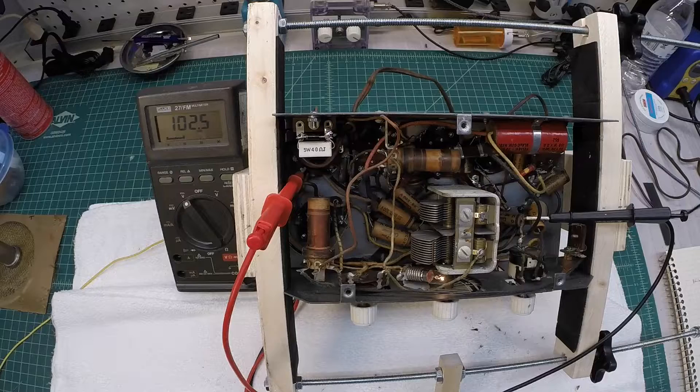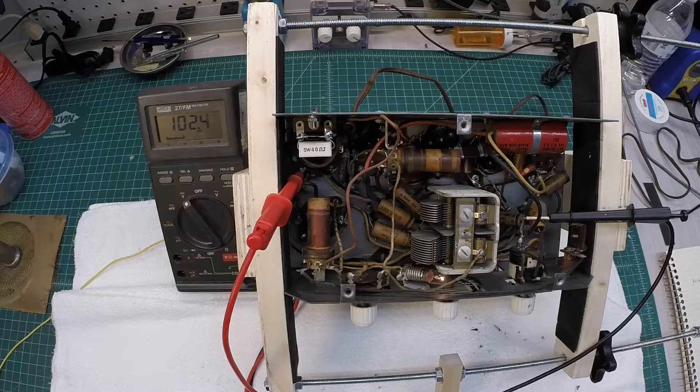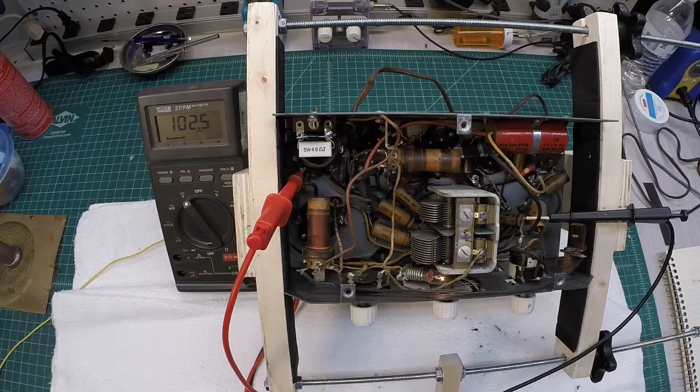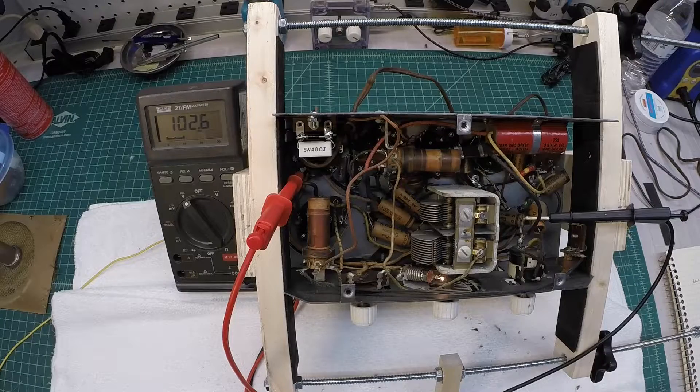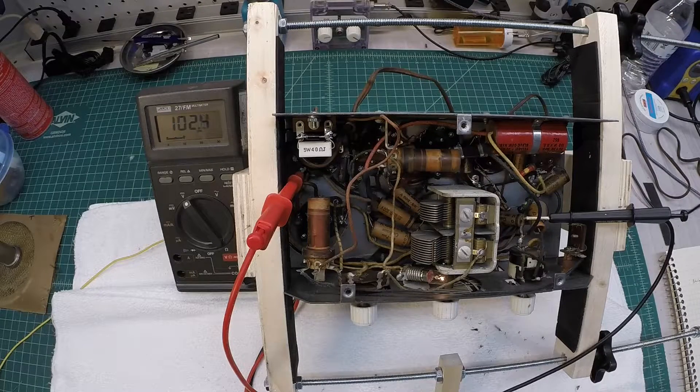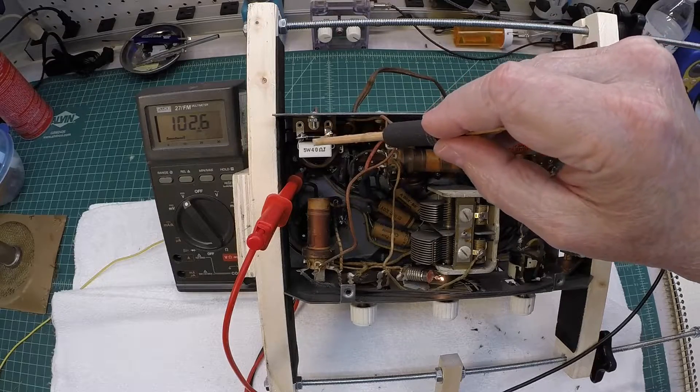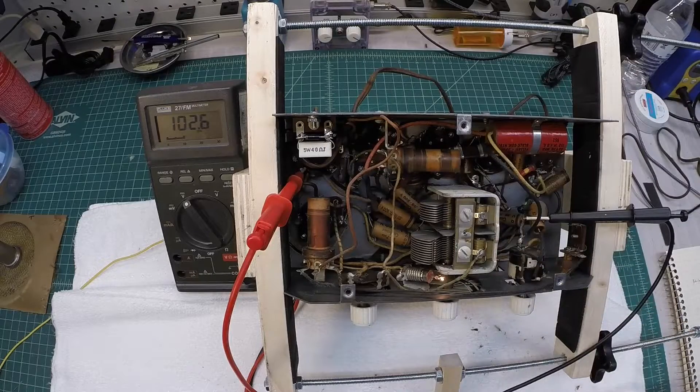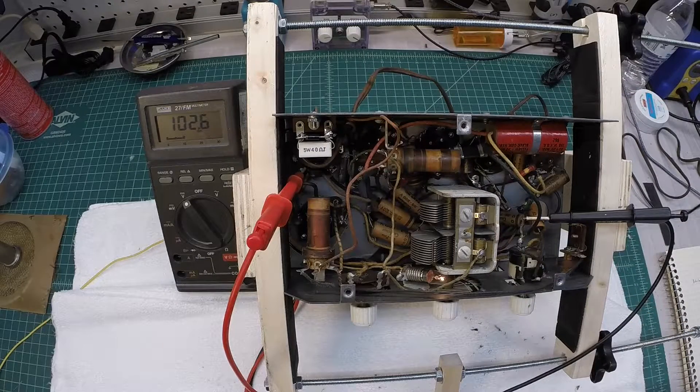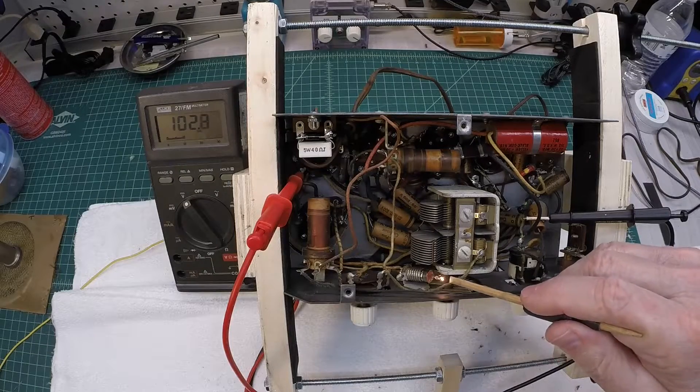So let's take a look at the schematic changes that I made to accommodate the ballast tube here by using a resistor in addition to a diode. And then we'll take a look as well at the Zener diode that was added and also the 5 watt 40 ohm resistor in parallel with the dial lamp itself here.